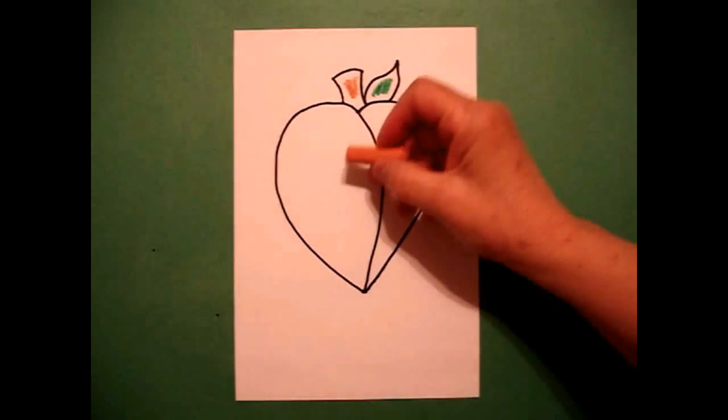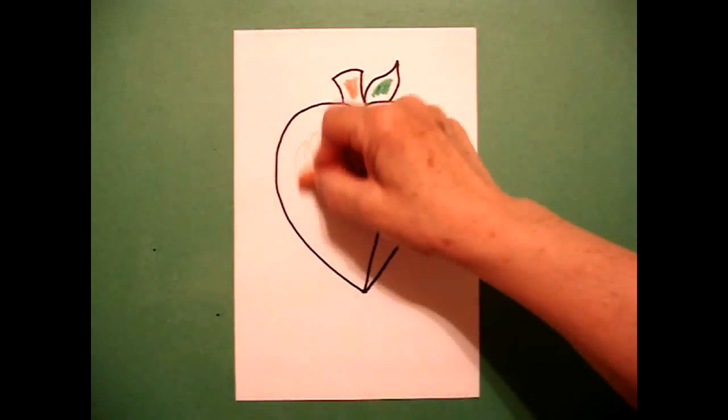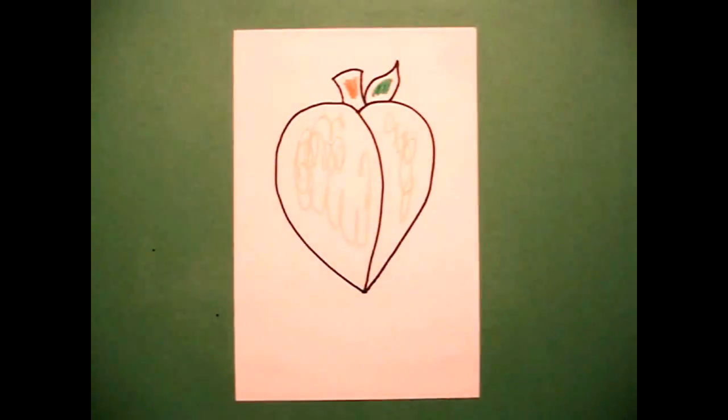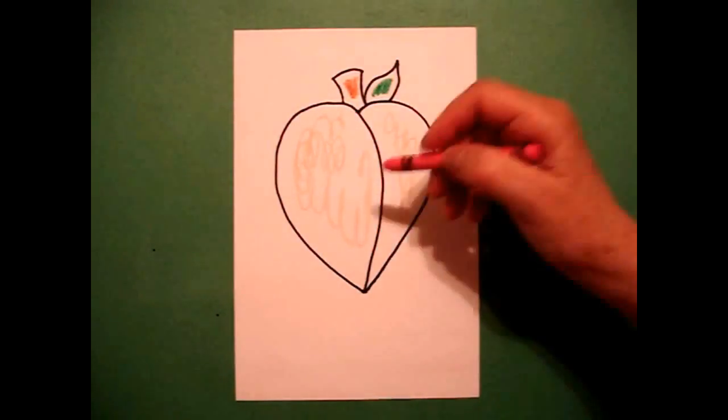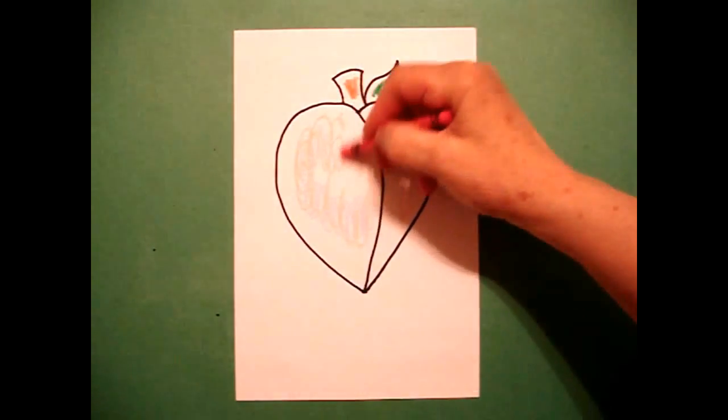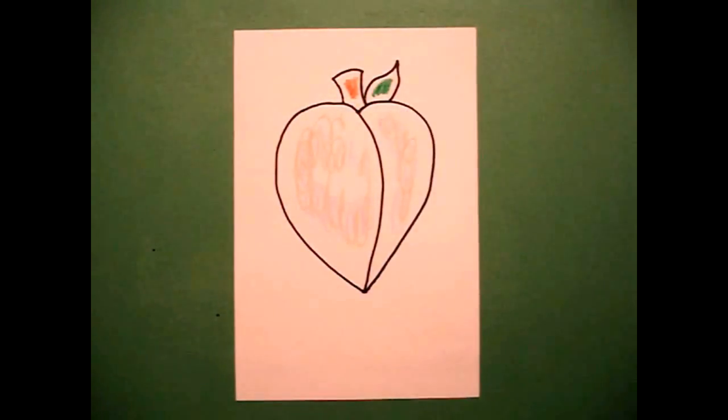And for my peach, I'm going to start off with an actual peach crayon and I'm going to do all this space peach. But then to give it a little bit of a glow, I'm going to come over lightly with pink. So it's a pinky peach all the way through.